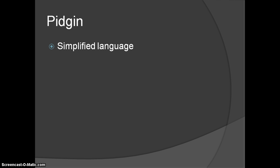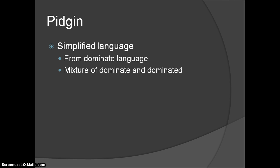Another important definition is pidgin language. Pidgin languages are typically used for economics and bartering, so people can communicate on a very simple level to trade with one another. A pidgin language is a simplified language — typically there's a dominant language and a less important language, and the pidgin is a form of the dominant language combined with the dominated language — simplified terms and phrases so that two groups can communicate for trading purposes.